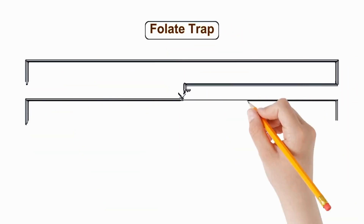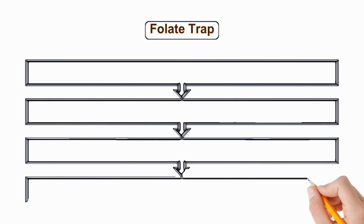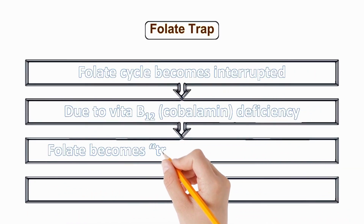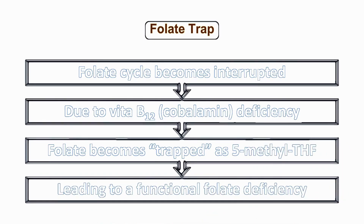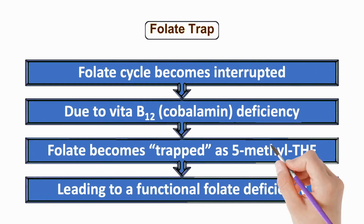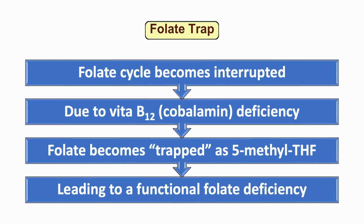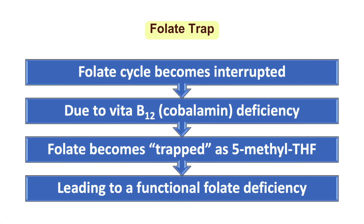To summarize, the folate cycle becomes interrupted due to the lack of enzymes, mainly due to vitamin B12 deficiency. As a result, folate stays trapped as N-5-methyl tetrahydrofolate, which is the inactive form. This leads to a functional folate deficiency in the body, even though there are sufficient inactive forms — which is why treating such a patient with more folic acid will not result in any improvement, since the conversion is not occurring successfully.